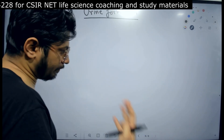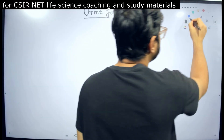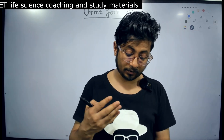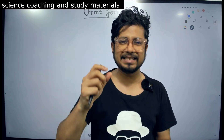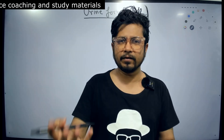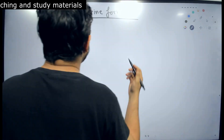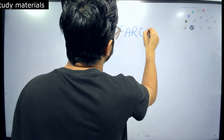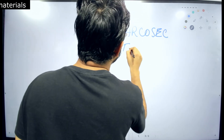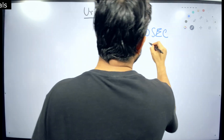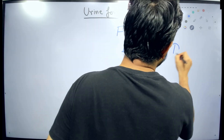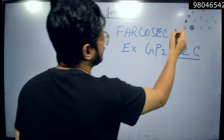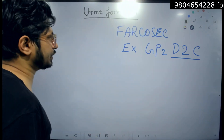What we have here for you to understand is this simple mnemonic, although the mnemonic is gibberish — there is no meaning. I was working on this mnemonic, but there is no simple one that is meaningful. This mnemonic is not meaningful; it is kind of gibberish, but I believe it will help you to understand what we want to achieve. And here we have this FAR-COSEC example.